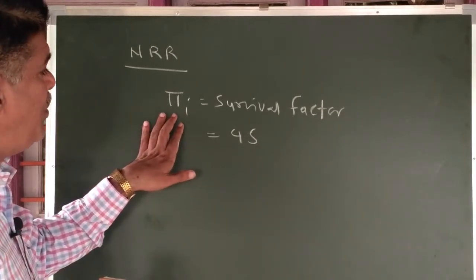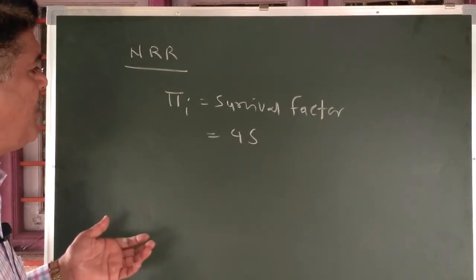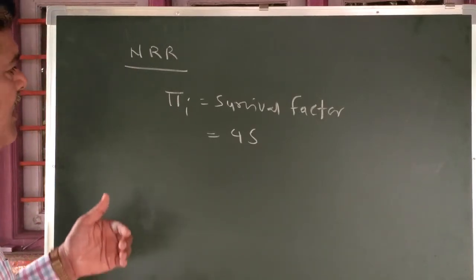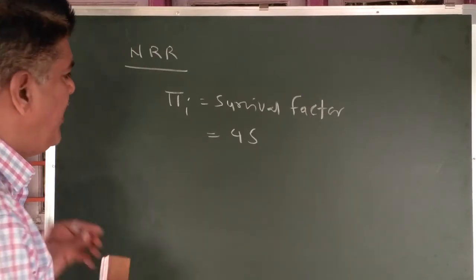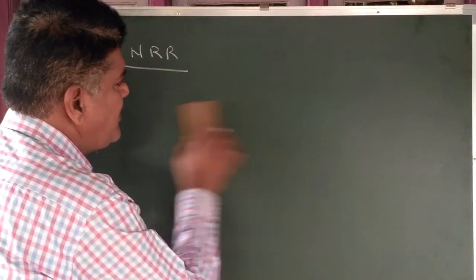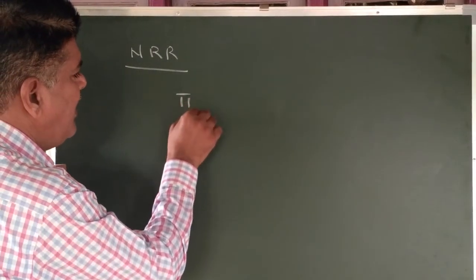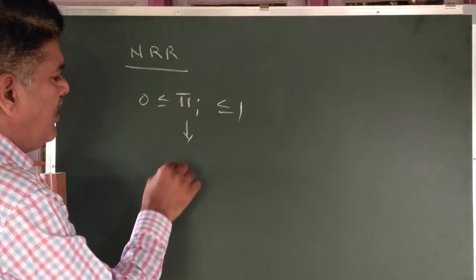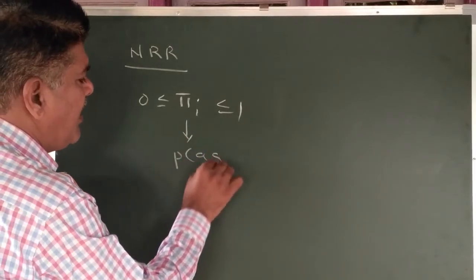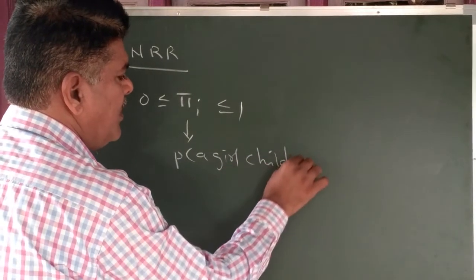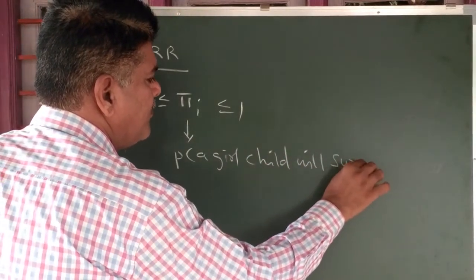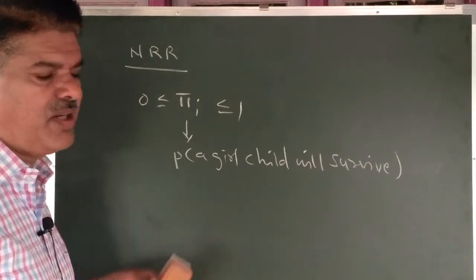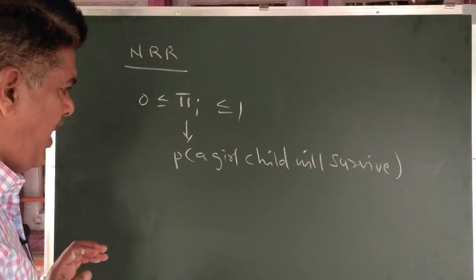We can calculate these Pi_i values to understand that a female child has survived up to a particular time period i. Note that Pi_i always lies between 0 and 1, because Pi_i is the probability that a girl child will survive up to her child-bearing age group, and probability always lies between 0 and 1.